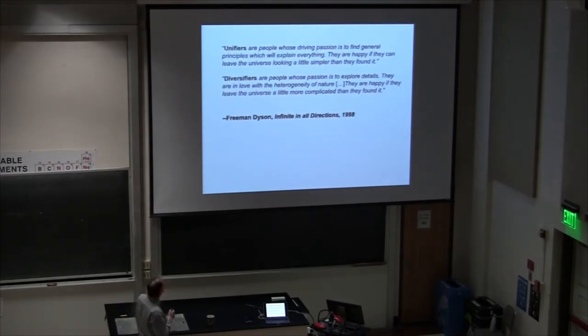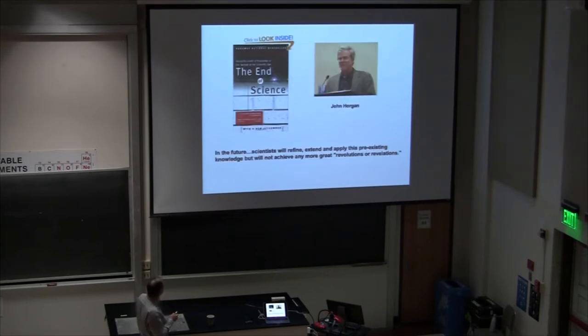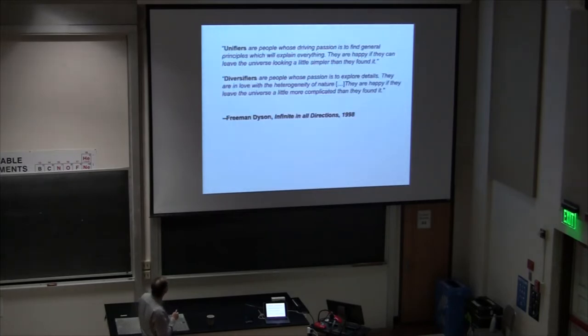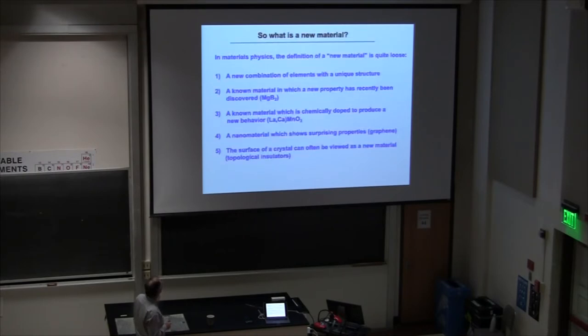As materials people, we like the other view better. This was expressed by Freeman Dyson. He talks about unifiers and diversifiers. Unifiers are kind of the Horgan types, and diversifiers are kind of the new materials types. Unifiers want to write the whole universe in a single equation. Diversifiers are happy to find all kinds of new complex behaviors. Dyson makes it clear he's in favor of the diversifiers in his book.